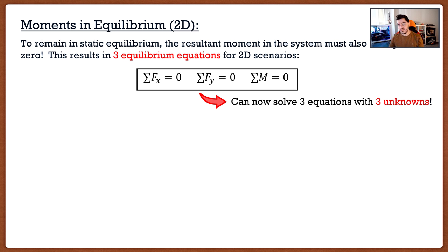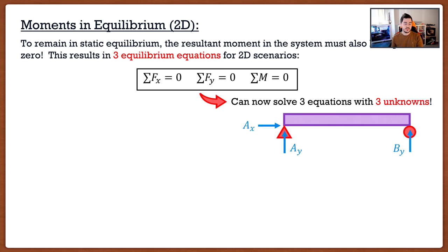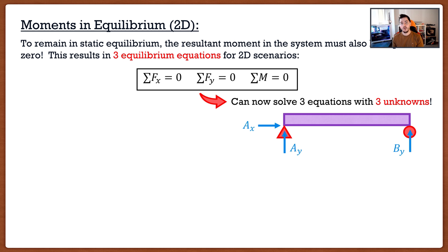You may be saying three unknowns sounds like more work — and it is, but it's not too bad in two dimensions. The first scenario with three unknowns is a simply supported beam with a pin and a roller. Pins create two unknown forces — horizontal and vertical — and rollers create one unknown force, which is vertical. That gives three unknown forces total, and we can use these three equilibrium equations to solve for them.